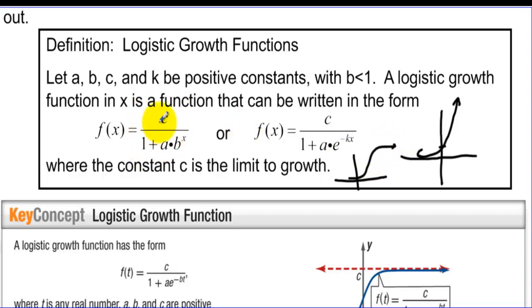So these are the logistic growth functions here. Let a, b, c, and k be positive constants with b less than 1. A logistic growth function in x is a function that can be written in the form c over 1 plus a times b to the x or c over 1 plus a times e to the negative kx, where the constant c is the limit to growth.